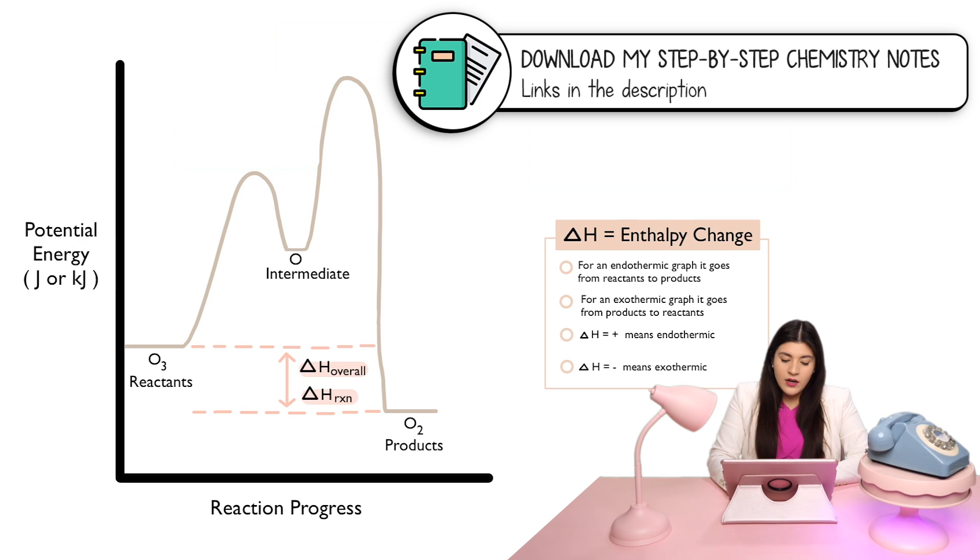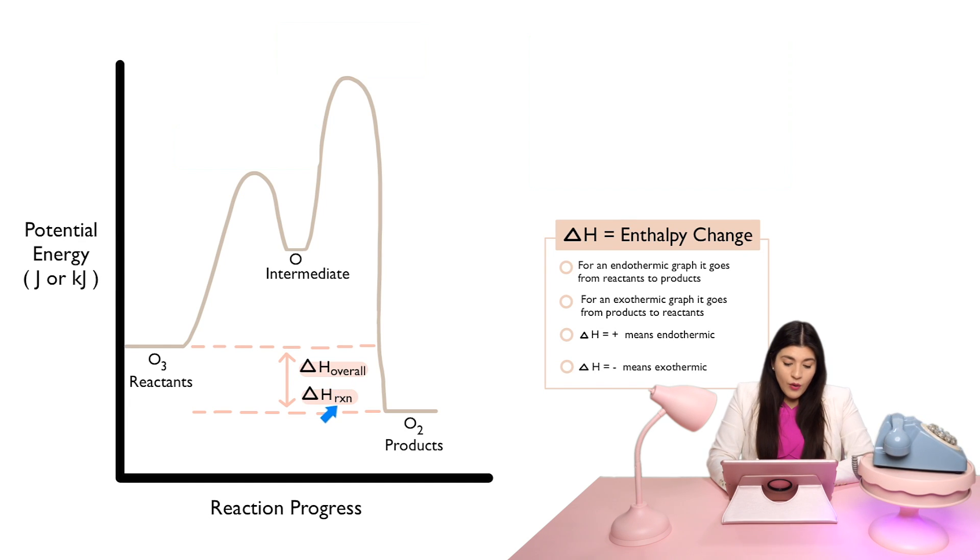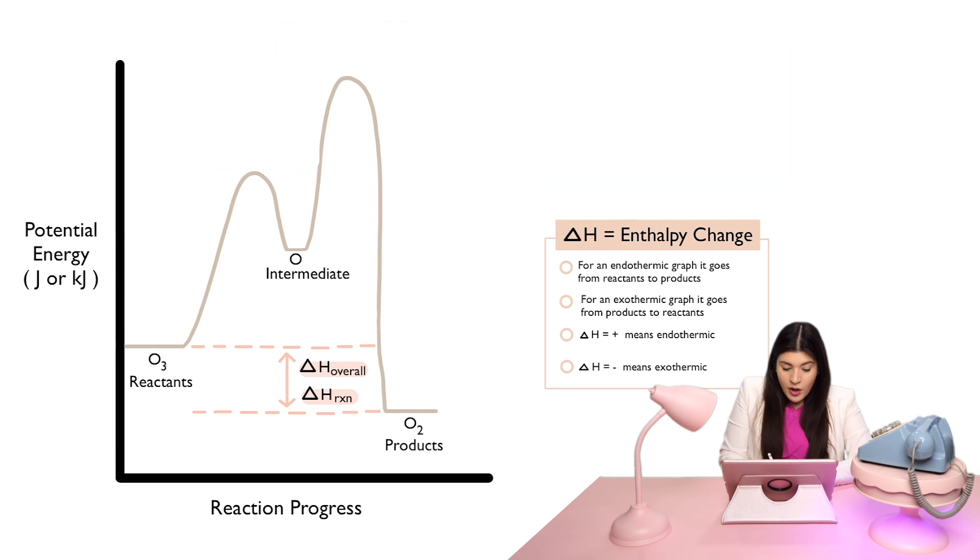So, you're either going to see it like this where this represents the enthalpy change and this says overall or you're going to see it like this where this just refers to the reaction. So, they both are describing the overall reaction. Now what I would do is I would measure this from the reactants to the products. You're literally going to take it from this line where we have our reactants and it's the distance from the reactants to the products. This is going to be our overall enthalpy change.